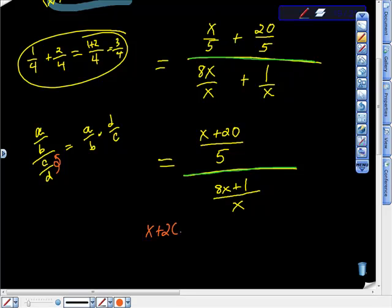So in the numerator, I have x plus 20 over 5. Let's call this the numerator and call this the denominator.